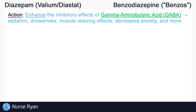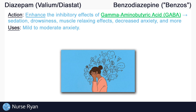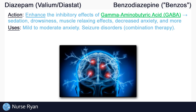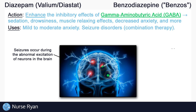Now that we know how diazepam works, it's a lot easier to work through what it's used for. Diazepam is often used as an anxiolytic for the symptomatic treatment of mild to moderate anxiety. It can be used in combination with other medications to manage seizure disorders. Seizures occur during the abnormal excitation of neurons in the brain, so it makes sense that diazepam — a drug that inhibits neuron activity — works to treat those excitable neurons by slowing down the electrical activity of the brain.